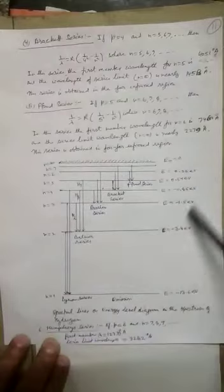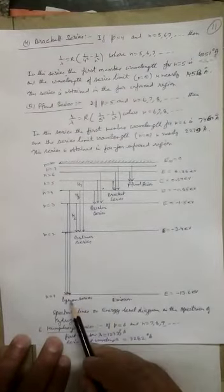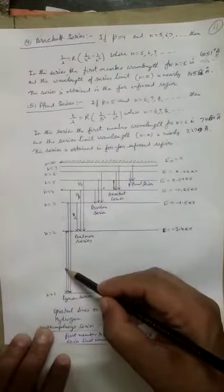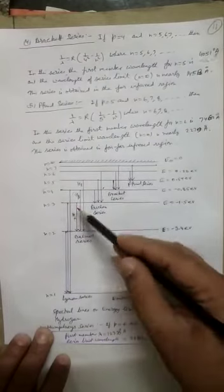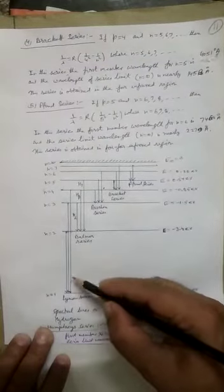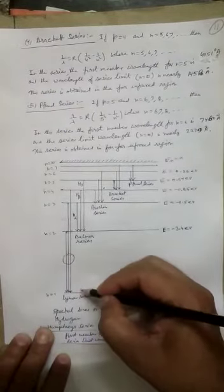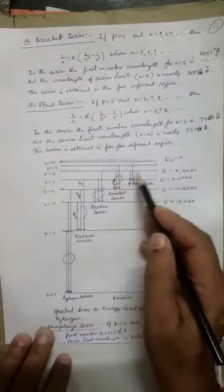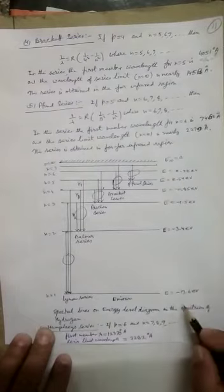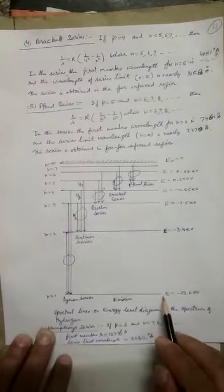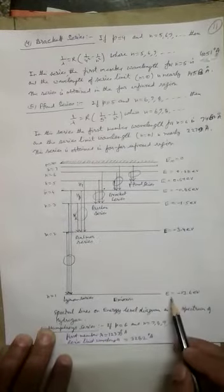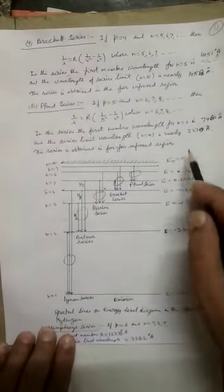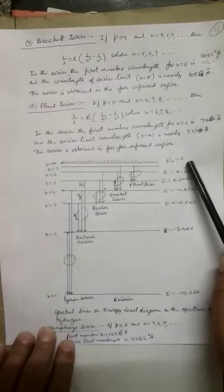Here is the spectral line energy level diagram of the hydrogen atom. The Lyman series is observed when n2 equal to 2 and n1 equal to 1, or n equal to 3 to n equal to 1, or n equal to 4 to n equal to 1. Similarly, Balmer series, Paschen series, Brackett series and Pfund series are all observed on this diagram. The energy of the first orbit is minus 13.6 electron volts as observed in the Bohr model. As we move to higher orbits the energy increases, and at infinite orbit the energy is zero.